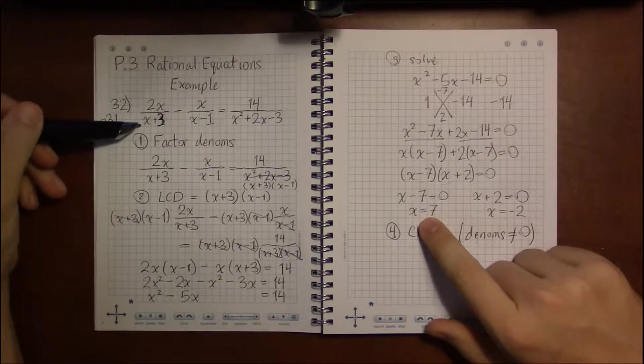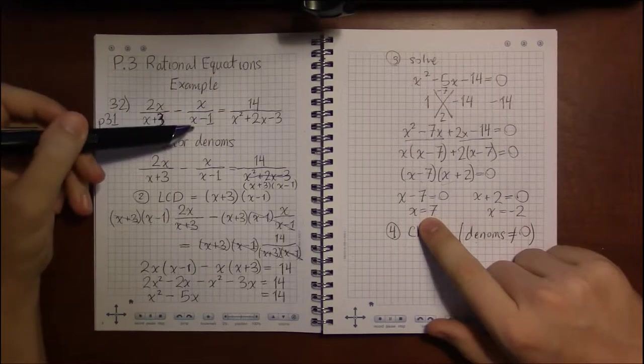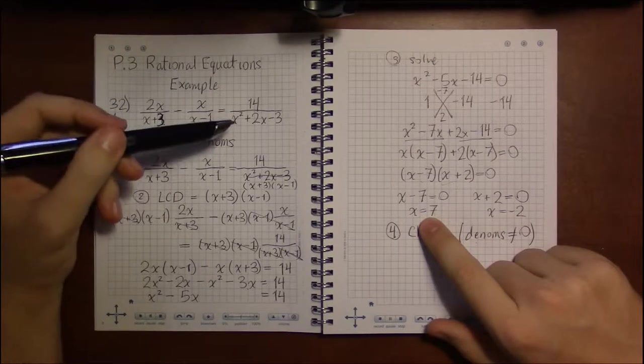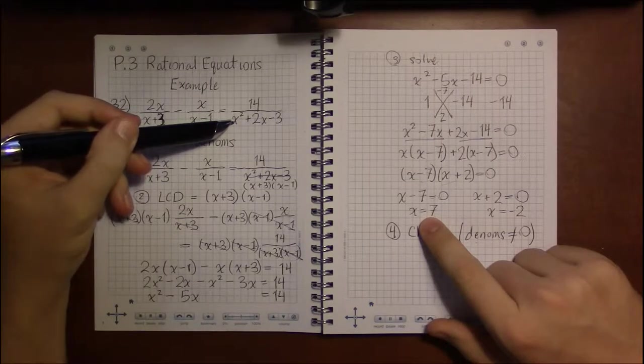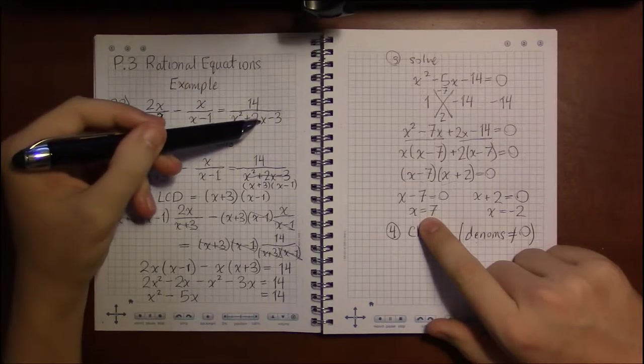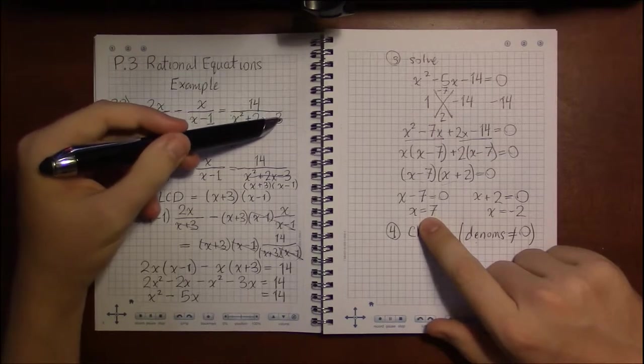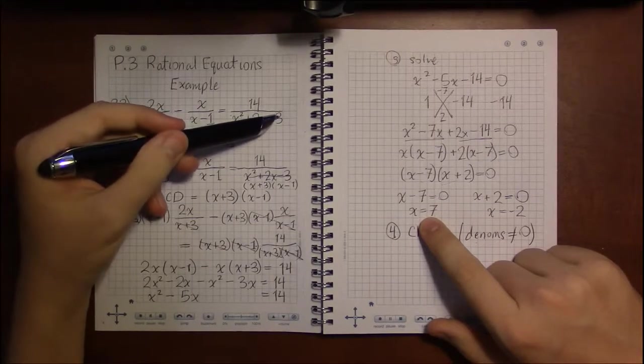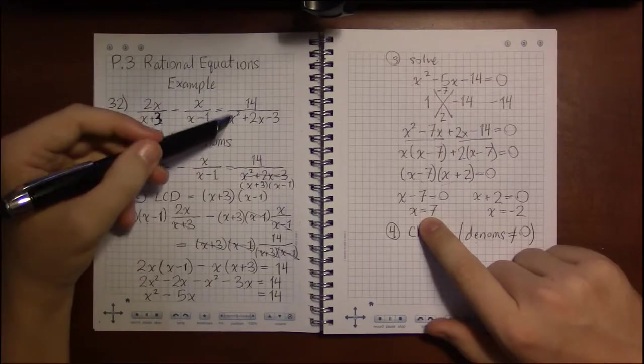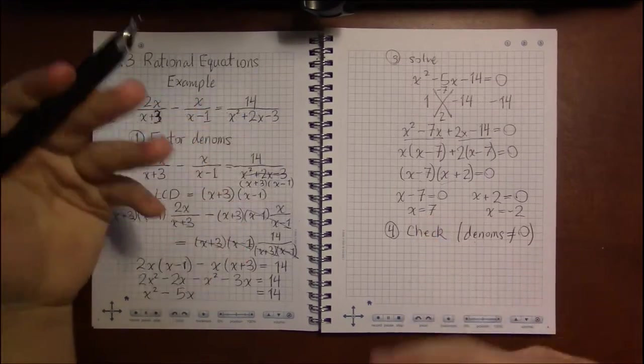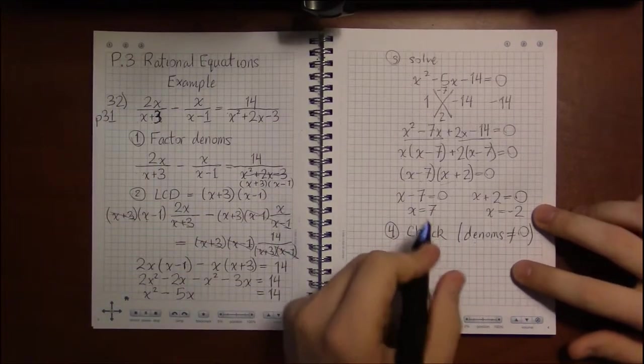But you can look at the factored version. Let's see. 7 plus 3, 10. 10 is not zero. 7 minus 1 is 6. 6 isn't zero. Let's see. That's 49. 49 plus 2 times 7. 2 times 7 is 14. 49 plus 14 minus 3. I don't know what that is, but I know it's not zero. You know, subtracting 3 from 49 and 14 doesn't get me close enough to zero. I'm still a large positive number. So, x equals 7 is a solution.